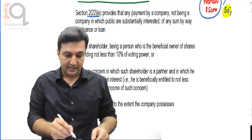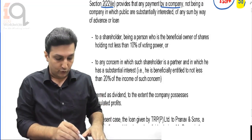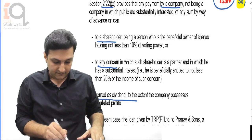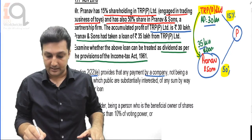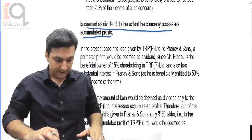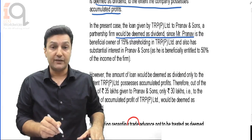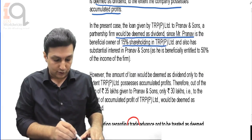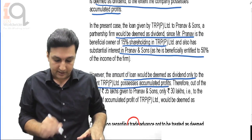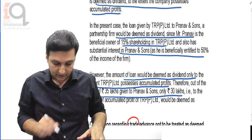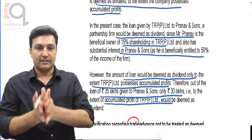Section 2(22)E provides that payment by a company not being a company in which the public is substantially interested, which gives any sum by way of loan or advance to a shareholder or to any concern, is deemed as dividend to the extent the company possesses accumulated profits. Therefore out of 35 lakhs, only 30 lakhs will be deemed to be dividend. In the present case, the loan given by TRP to Pranav and Sons would be deemed dividend since Pranav is a beneficial owner of 15% in TRP and also has substantial interest in Pranav and Sons. The amount of loan would be deemed dividend only to the extent TRP possesses accumulated profits - therefore out of 35 lakhs, only 30 lakhs will be deemed to be dividend. For intermediate level, that is all we need to cover - listen to this lecture once more as it may be important and a question could come in the paper.